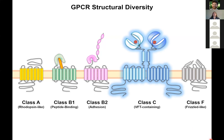The class C receptors are characterized by being dimeric receptors, unlike the other classes of GPCRs — they're obligate dimers. They also have a very large extracellular domain, and this extracellular domain contains something called the venus flytrap domain, which is a clamshell-like domain which binds the ligand. The other classes of GPCRs bind their ligands near the transmembrane domain, and the class C receptor is different in that it's binding the ligand externally to the transmembrane region.